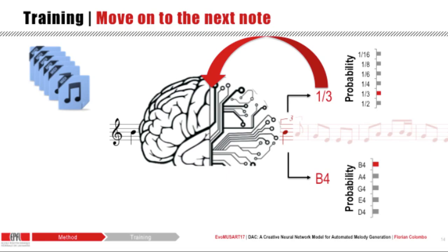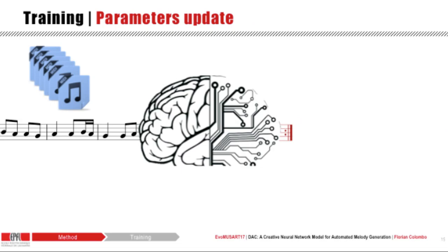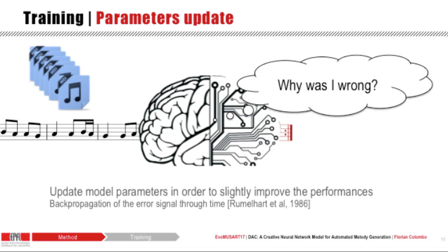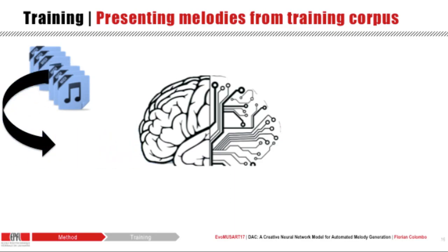The model doesn't know what to do and cannot take any decision. It is only when we reach the end of each song that we try to understand why the predictions were wrong. Thanks to the backpropagation algorithm, we can update the model parameters in order to slightly improve the performance. Then we apply the same procedure to another randomly selected melody from the training corpus.